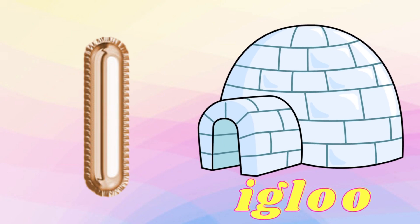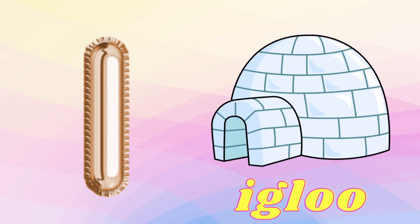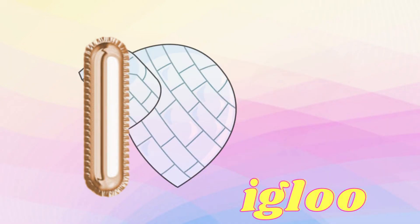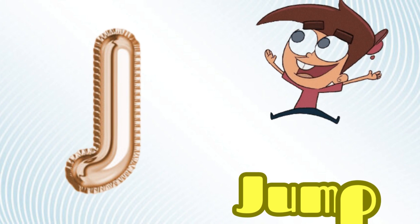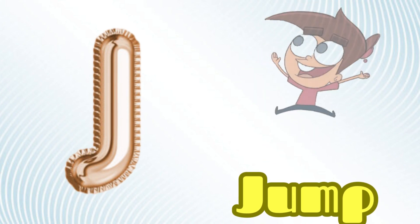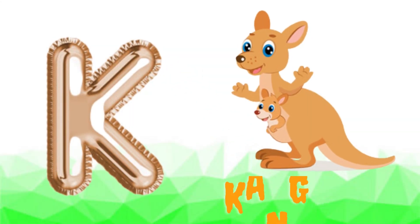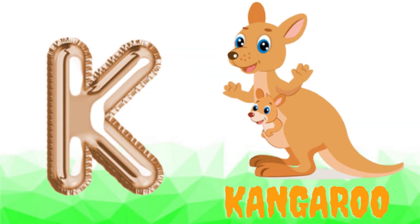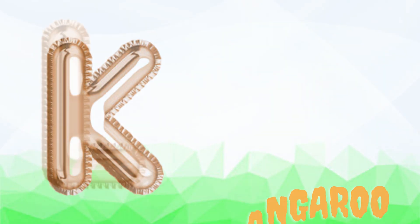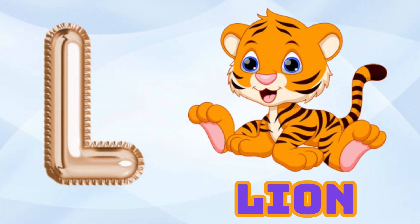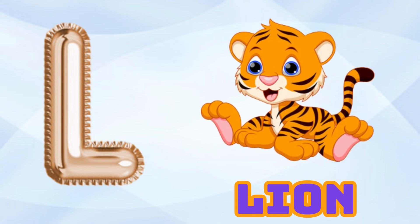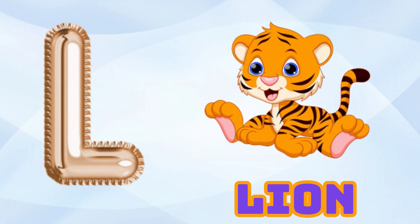I is for igloo, i-i-igloo. J is for jump, j-j-jump. K is for kangaroo, k-k-kangaroo. L is for lion, l-l-lion.